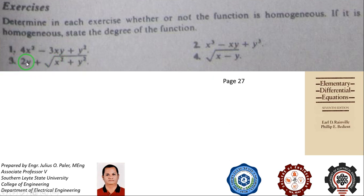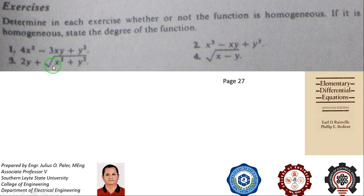For number three, you have 2y plus the square root of the quantity x squared plus y squared. The degree of the quantity x squared plus y squared is 2. Including the radical sign, which contributes a power of one half, 2 times one half gives degree 1. The degree of 2y is also 1. Therefore, this function is homogeneous to the first degree.